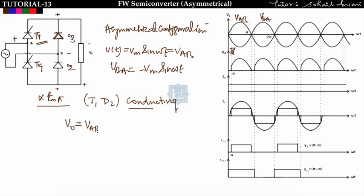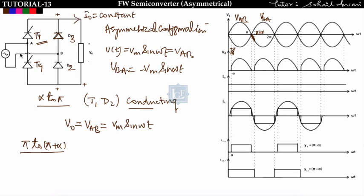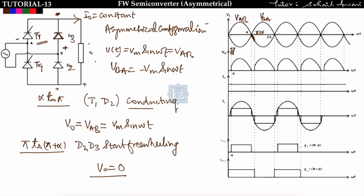From alpha to pi, T1 and D2 conduct and the output voltage equals Vab equal to Vm sine(omega t). After pi, from pi to pi plus alpha, the supply voltage is negative. When the supply polarity reverses and load current I0 remains constant, terminal B is at plus and A is at minus, so D3 starts conducting. D2 and D3 start freewheeling and the output voltage becomes zero, since the load is shorted.